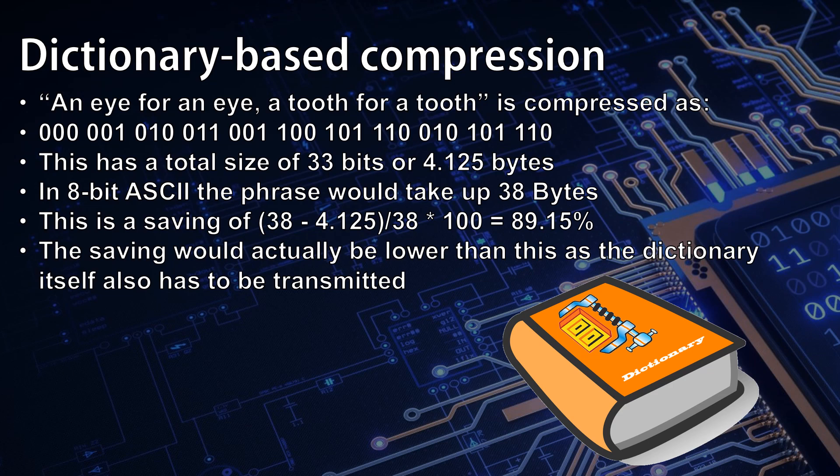This example shows only a very short phrase being converted to dictionary-based compression. You may be thinking that the size of the dictionary renders it a little bit useless. However, as the size of the text being transmitted grows, the difference between the size of the actual text and the size of the dictionary needed grows a lot, meaning that this is a very effective method for compressing large amounts of text.